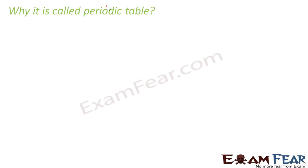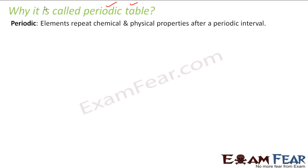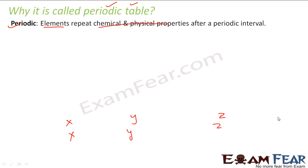But before that, let's understand why this is called the periodic table — why it is not called an ABC table, but is called periodic table. It is called periodic because in the periodic table, elements repeat their chemical and physical properties after a periodic interval. So if you go from one position to the next, let's say an element has property X, the next has Y, the next has Z — then again you come back to property X, then Y, then Z. So there is a periodicity in which properties repeat. That's why it's called periodic. And it is called a table because it is in tabular form.